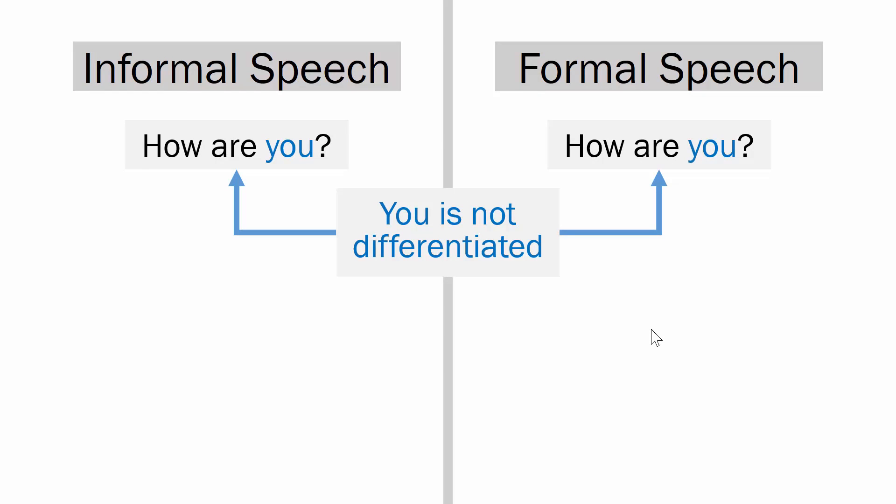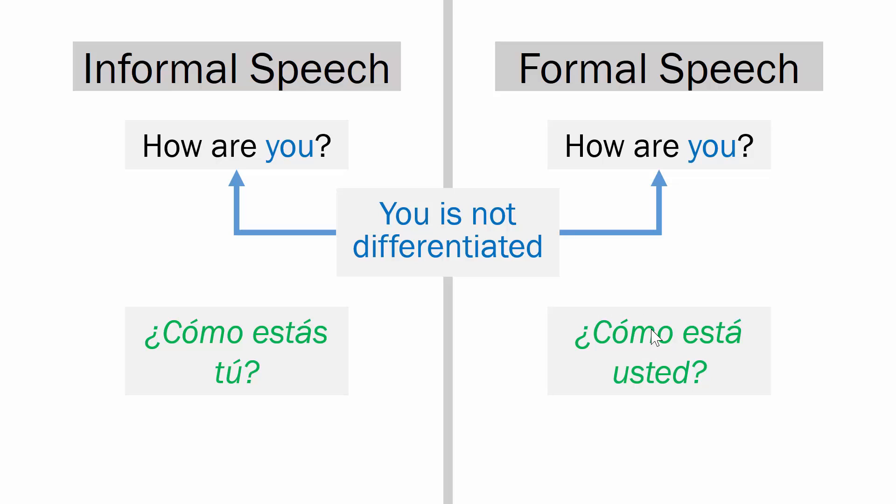In informal speech, 'How are you?' is '¿Cómo estás?' — or '¿Cómo estás tú?' with that 'tú' on the end. In formal speech, there's a slight change: '¿Cómo está usted?' Take a moment and pause the video if you need to — identify which words mean 'you' in the informal and the formal speech.